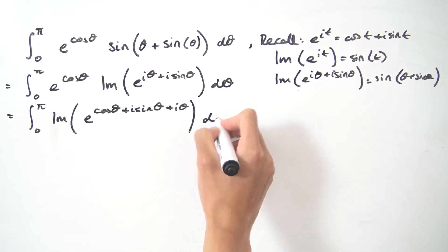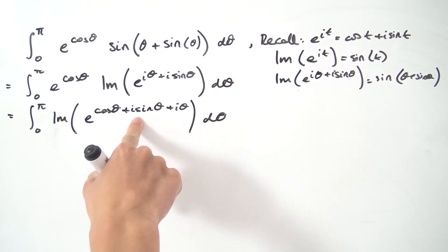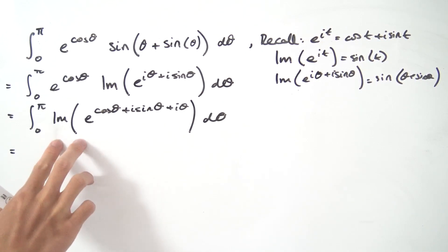Now you may notice that we have cosine plus i times the sine, so we can use Euler's formula once again. I'm going to bring this imaginary part operator to the front of the integral because if you integrate the imaginary part, that's the same thing as taking the imaginary part of the integral.